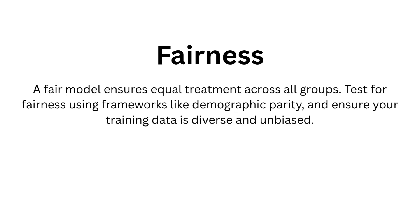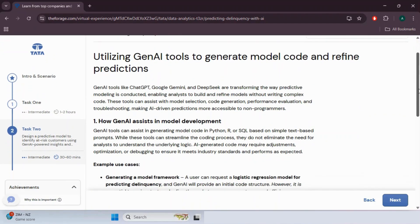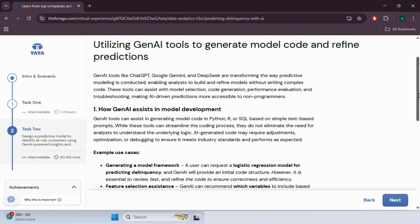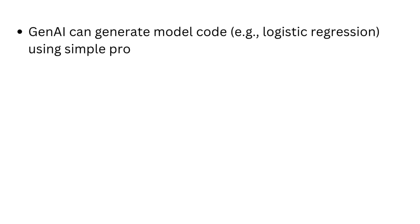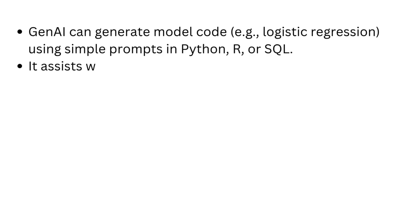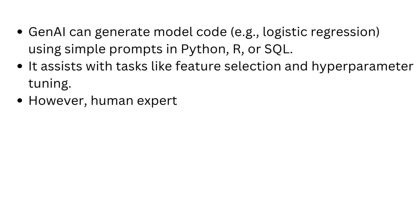Responsible AI in finance means combining Gen AI tools with ethical practices, transparency, and compliance — human oversight remains essential. This next page highlights how Gen AI tools like ChatGPT and DeepSeek are revolutionizing predictive modeling and credit risk assessment by making it more accessible, even for those with limited coding experience. Gen AI can generate model code — for example, logistic regression using simple prompts in Python, R, or SQL — and assists with feature selection and hyperparameter tuning.